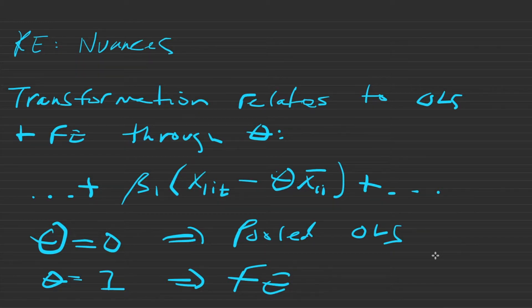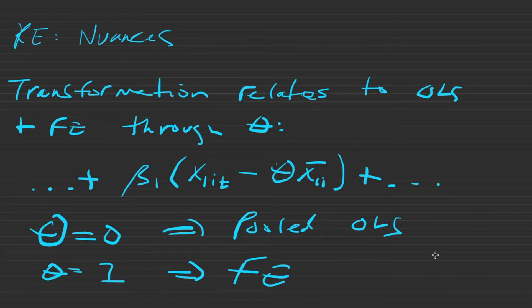It is usually informative to run all three, pooled OLS, fixed effects, and random effects, and compare the three sets of estimates to help determine the nature of the biases caused by leaving ai entirely in the composite error term vi.